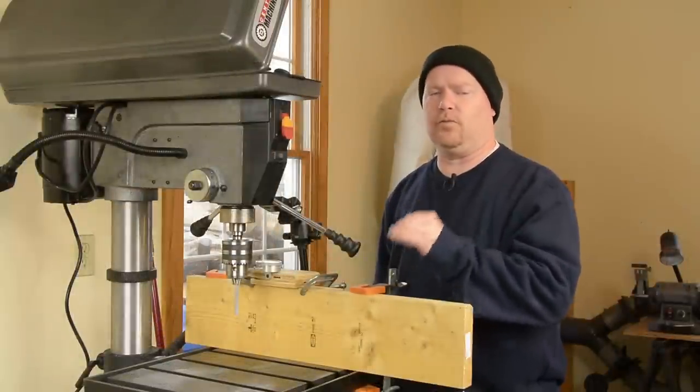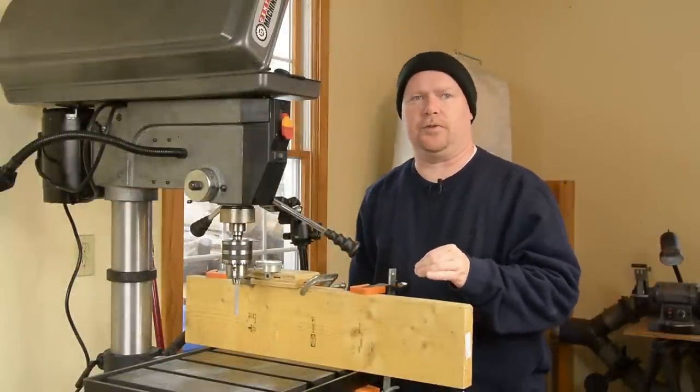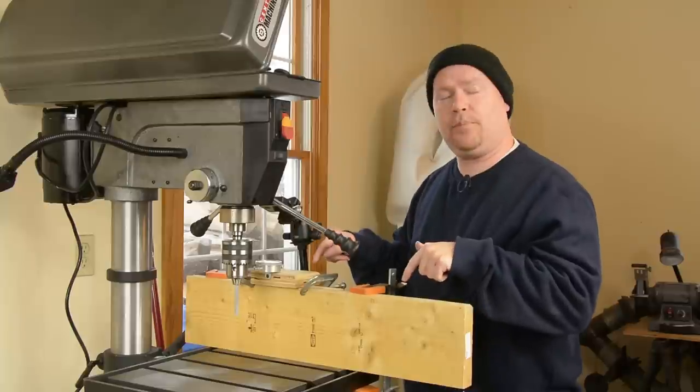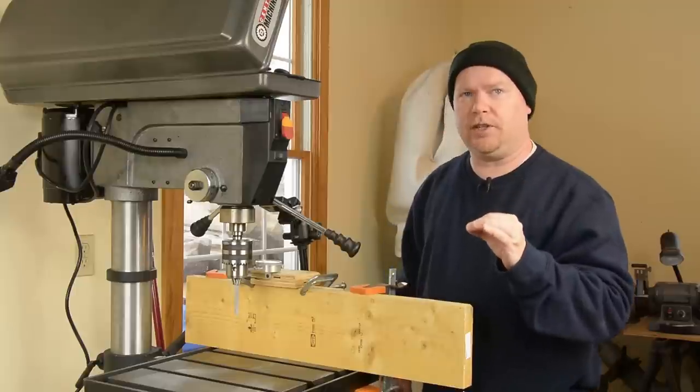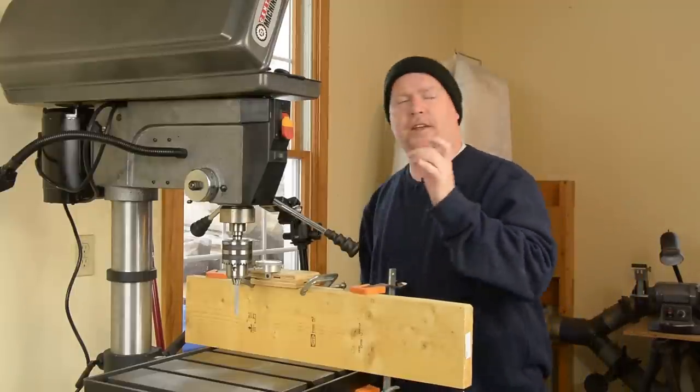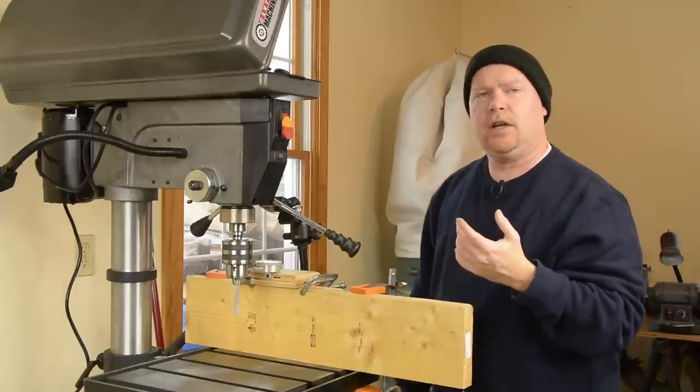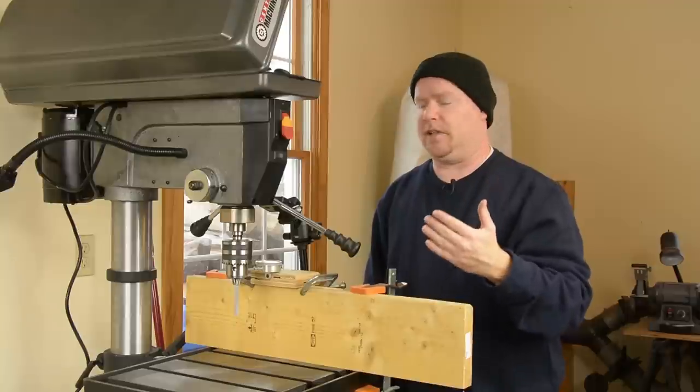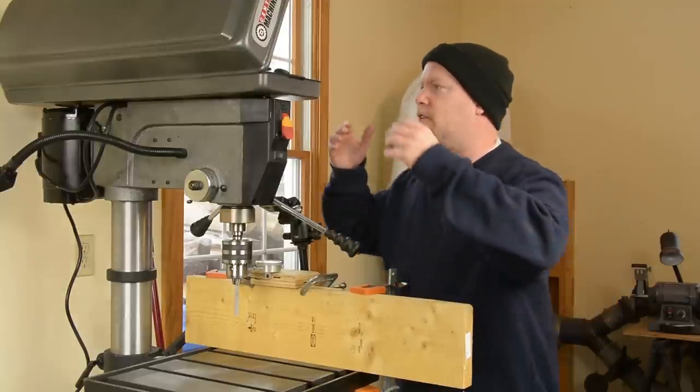The process for measuring the run-out of the chuck body is exactly the same as it was for measuring the spindle. You clamp the dial indicator in place so that the needle is partially depressed, so you're in the middle of a reading. You zero it out and then you run the pulley around 360 degrees a couple of times if you wish to figure out how much this thing is moving back and forth. So let's run this thing around and see what the run-out actually is.